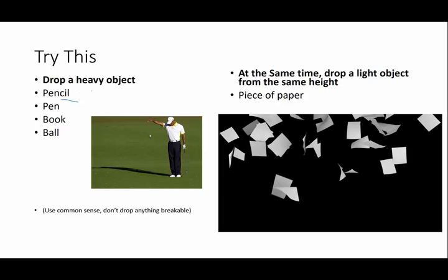Okay, what happened when you dropped a heavy object and a light object? You probably saw the same thing that Galileo's cohorts found, that the heavy object fell much faster than the light object.